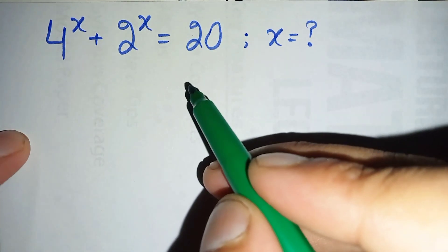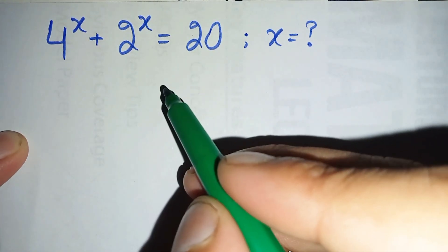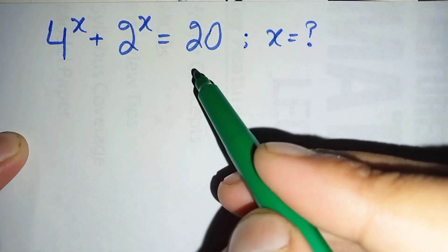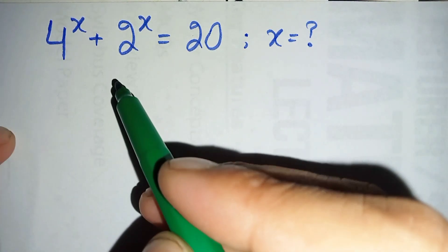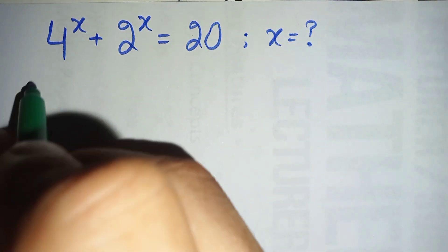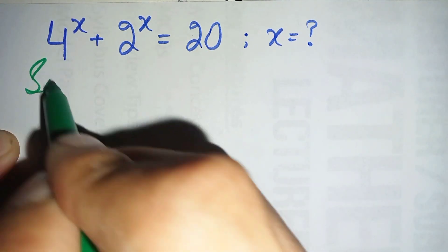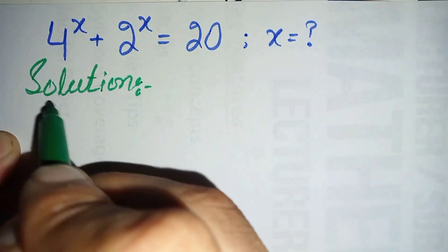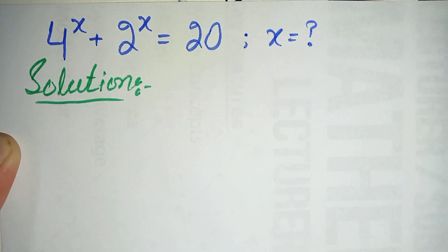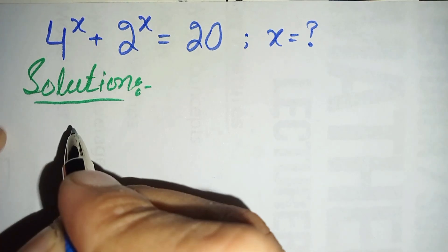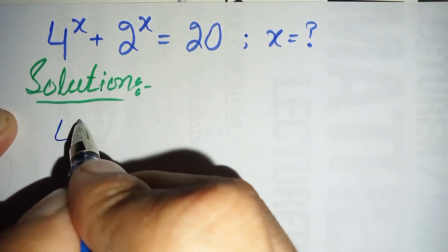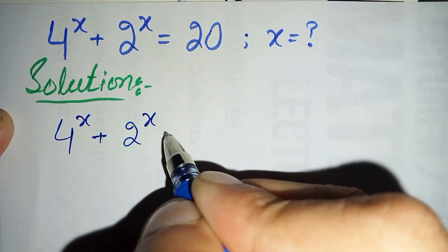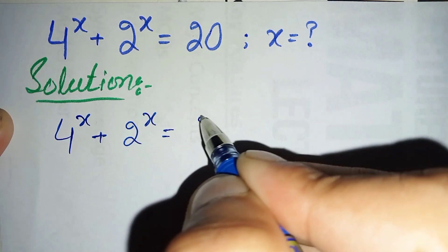Hi everyone, you are welcome. How to solve this nice exponential equation: 4 raised to power x plus 2 raised to power x is equal to 20. Now here to solve this problem step by step, first we will write the solution, and after the solution we will rewrite the problem. The problem is 4 raised to power x plus 2 raised to power x is equal to 20.